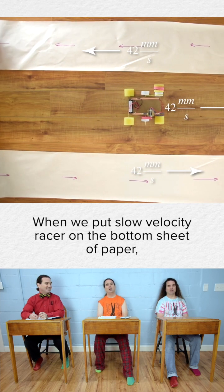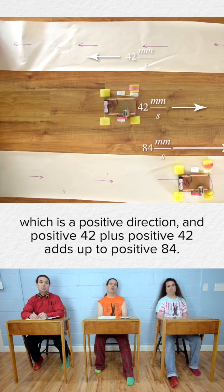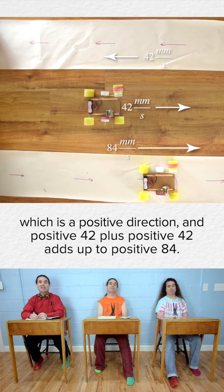When we put Slow Velocity Eraser on the bottom sheet of paper, she will be moving at 84 millimeters per second because both velocities are to the right, which is a positive direction, and positive 42 plus positive 42 adds up to positive 84.